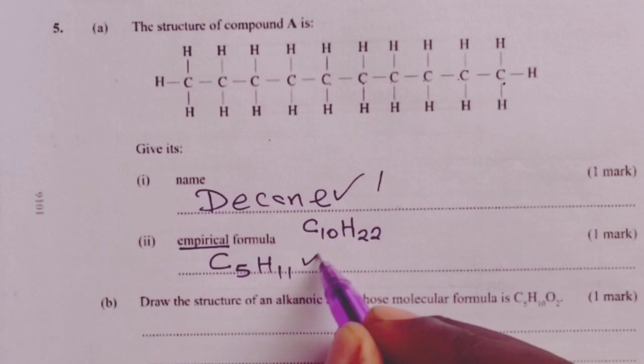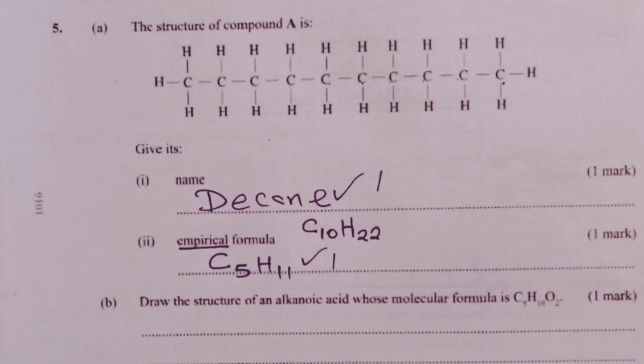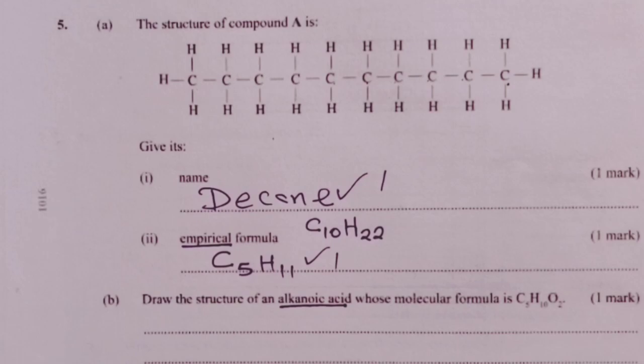Question 5 part B was borrowed from form 4 and because we are discussing form 3 work in this video, we shall exclude question 5 part B. This was borrowed from alkanoic acid group that is normally discussed in form 4.